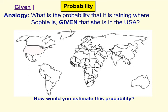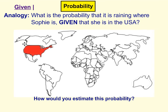So we find our 'given,' we look at what's already happened — she is in the USA. We highlight that, then look at the first part: what is the probability that it is raining? We now don't care about the whole world, we just care about where it's raining in the US. It may be that it's only raining on the west coast, so this region here is all rain, but nowhere else. Take a moment and think — how would you calculate a rough estimate for the probability that it's raining where Sophie is, given that she could be anywhere in the United States?